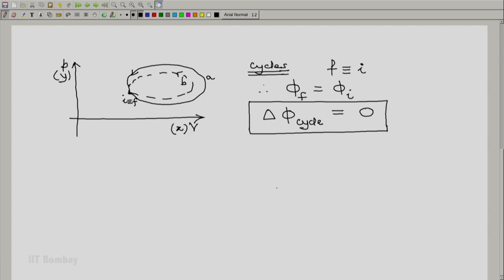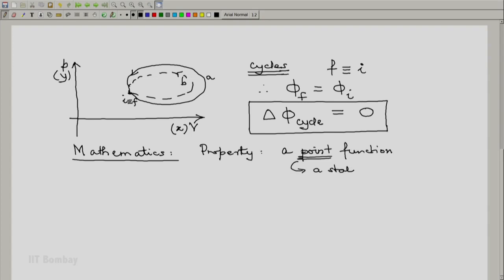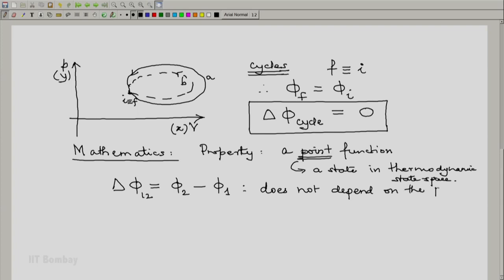This is something which one should remember. From a mathematical point of view, in thermodynamics we say that properties depend only on the state of a system — any property is a point function, because a point represents a given state in thermodynamic state space. Also, since the change in property — final value minus initial value — does not depend on the path, if you consider a small part of the process with a change d phi and integrate it from 1 to 2, this integral becomes delta phi 1 to 2 and is independent of the path.